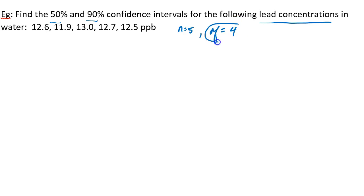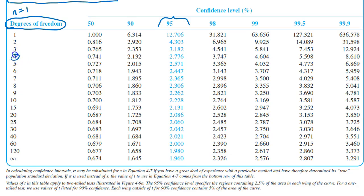So the 50% confidence interval is going to be the mean plus or minus some range. So I'll let you calculate the mean on your own. I got 12.5 plus or minus TS over the square root of n. So we need to find the value of T at 4 degrees of freedom and 50% confidence. So here we go, 4 degrees of freedom, 50% confidence. That's 0.741.